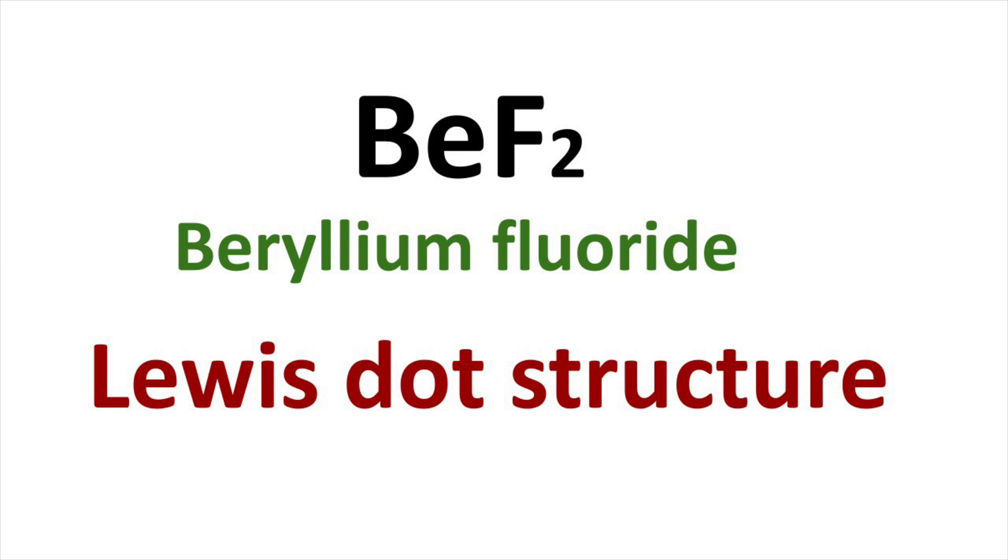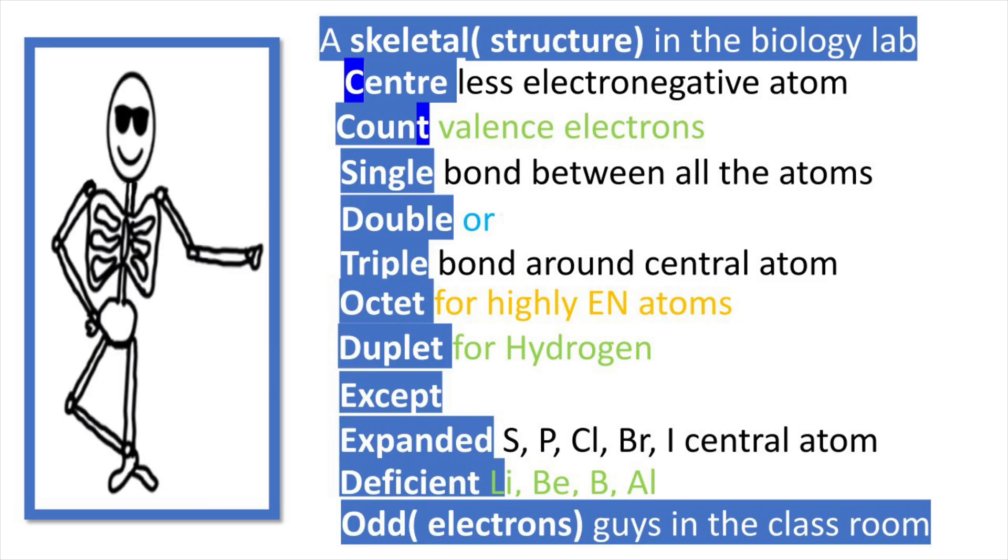We are here to discuss Lewis dot structure of BeF2, beryllium fluoride. To write Lewis dot structure, let us see a beautiful mnemonic: a skeletal in the biology lab, center, count, single, double, triple, octet, duplet, except expanded, deficient, odd guys in the classroom.